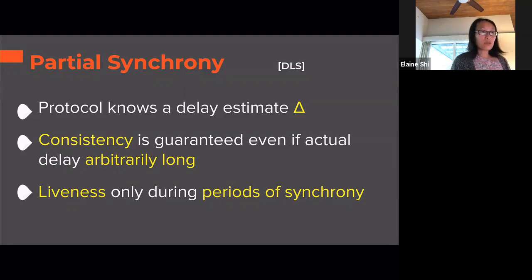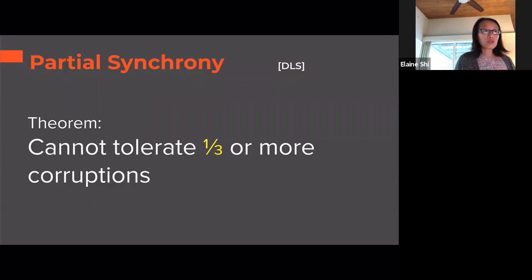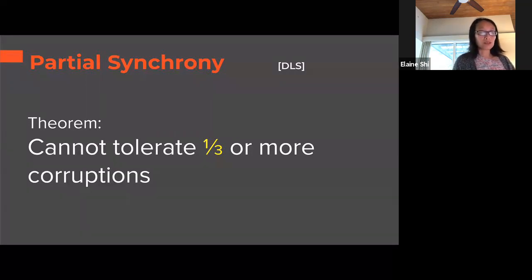The classical protocols — PBFT, Paxos — were all essentially in the same partially synchronous model. It is well known that in the partially synchronous setting, no protocol can tolerate one-third or more corruptions. So essentially Streamlet achieves optimal resilience, just like the classical candidates PBFT and Paxos. This is also partly why I said Streamlet subsumes these classical candidates.